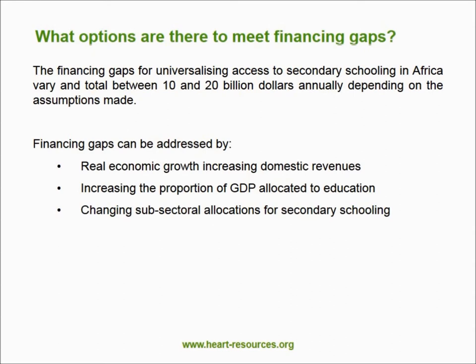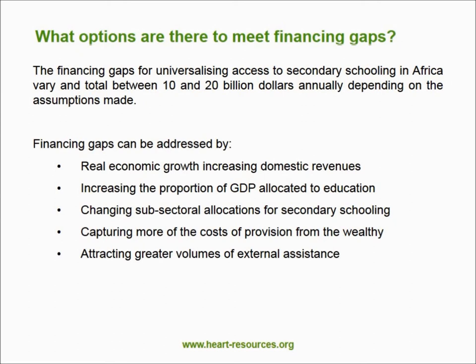You can increase the proportion of GDP allocated to the education system and change the subsectoral allocation. There are some countries which spend more on their university system than on all their secondary schools — this cannot be right. It should be possible to develop progressive funding systems that seek to capture more of the cost of provision from those in the top quintile or top two quintiles, and transfer the benefits of subsidised places to those from the bottom quintile households. It is also possible to address financing gaps by attracting greater volumes of external assistance, but this should always be coupled with clear pathways forward that catalyse change towards a sustainable model of financing requiring no external assistance, with increasing internal efficiency and reducing costs per student.